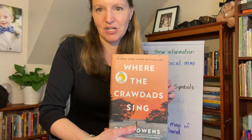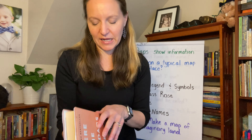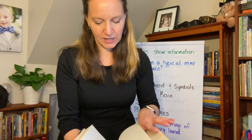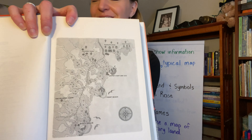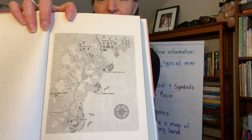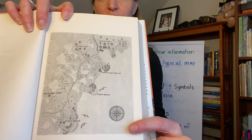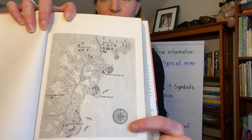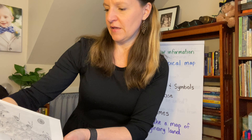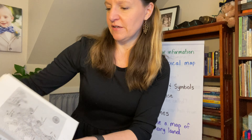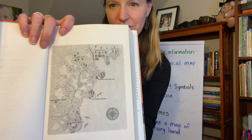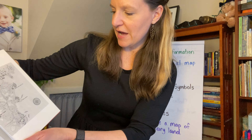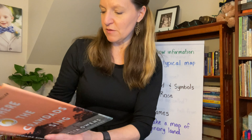Here's a book I read last year that I loved. Inside this book there's also a map, and look at that beautiful compass rose. They've got actual houses on here. Not many people lived in this area so they were able to show some houses and the towns, the beach.